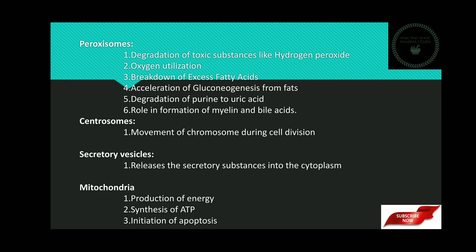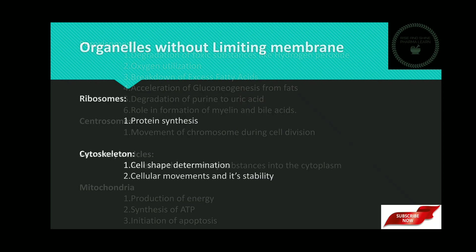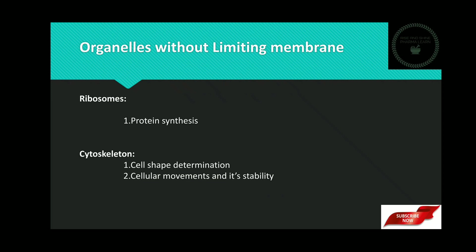Next, mitochondria. Mitochondria is the powerhouse of the cell. Its most predominant role is to produce the energy currency of the cell. It converts ADP to ATP during the respiration process. It is also involved in initiating the apoptosis process by releasing proteins that lead to apoptosis. Apoptosis means programmed cell death or cell suicide. Next, organelles without the limiting membrane. The first one is ribosomes. Ribosomes are involved in protein synthesis using the enzyme rRNA, which catalyzes the synthesis of protein. Next, cytoskeleton. Cytoskeleton consists of intracellular proteins which provide cell shape determination, cellular movement, and stability.